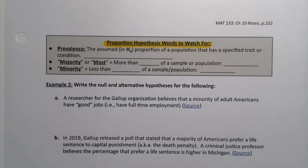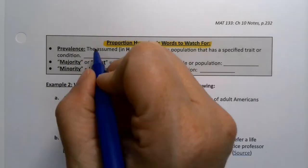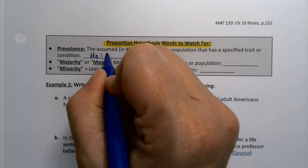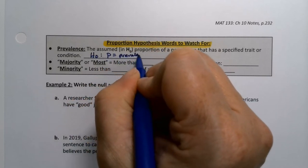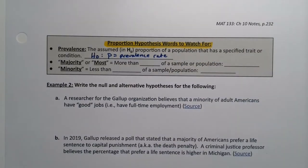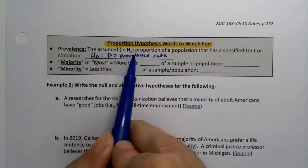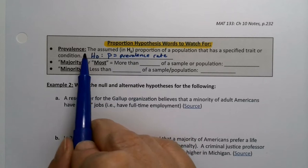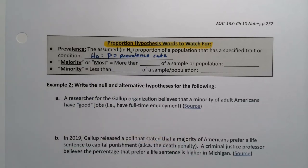For example, prevalence. The word prevalence in nursing and health and epidemiology stands for the proportion of a population that has a specified trait or condition. So if you see prevalence, it's telling you that H0 is P equals your prevalence rate. Knowing the prevalence means you know the H0.